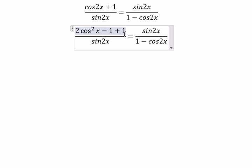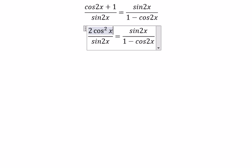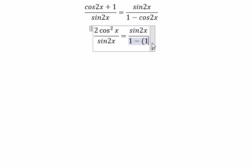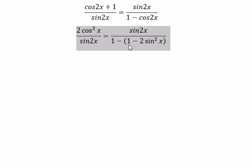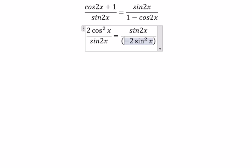The 1 with negative 1 will cancel. We can change this to 1 minus 2 sine squared x. The 1 minus 1 will cancel, and we have a negative here which will change to positive.